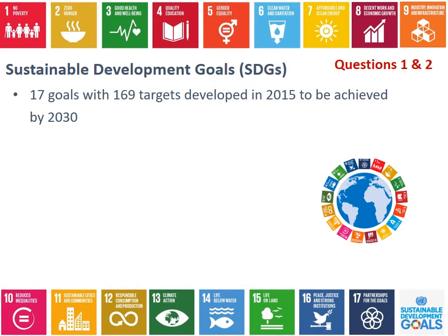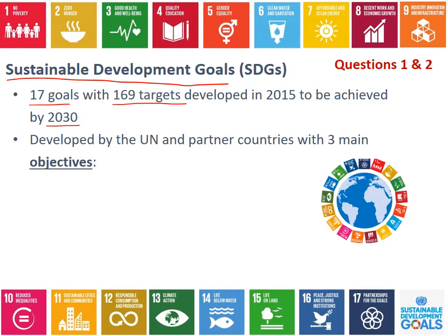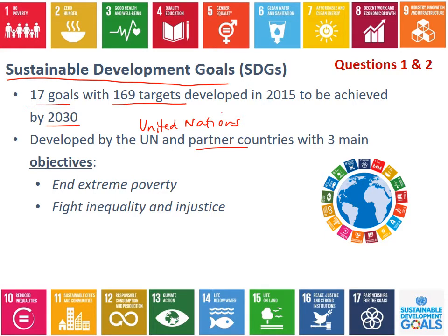The Sustainable Development Goals are often called the SDGs for short, but you absolutely need to know what that stands for. These are 17 global goals with 169 targets, developed in 2015 with an end goal date of 2030. The goals were created by the UN — the United Nations — along with over 100 partner countries, with three main objectives: to end extreme poverty, to fight inequality and injustice, and to address climate change.